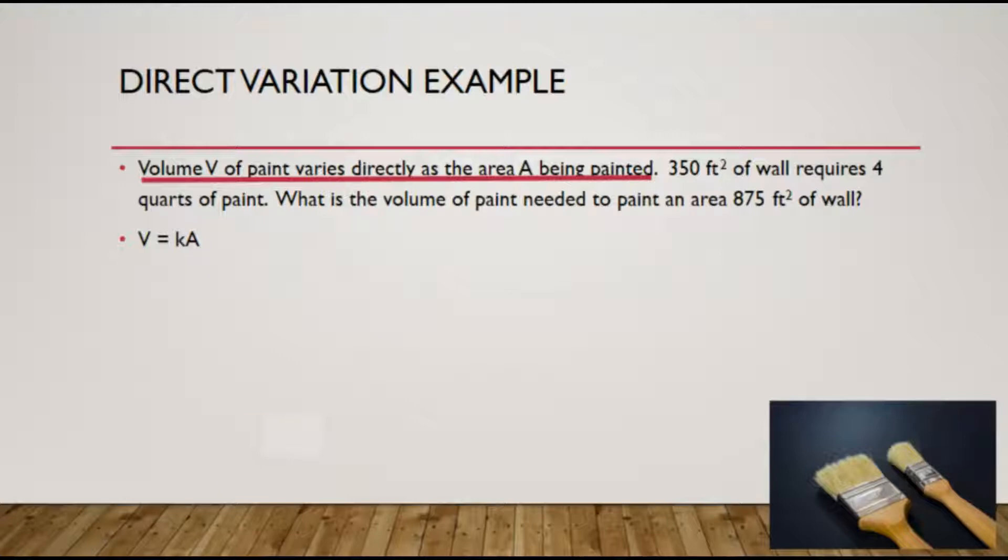From this equation, we need to use information from the problem to solve for that constant, or to determine the value of k. The second sentence tells us we have an area 350 square feet, which relates to 4 quarts of paint, which would be a volume value.